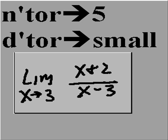So as x approaches 3, the numerator approaches 5, and the denominator just gets small.